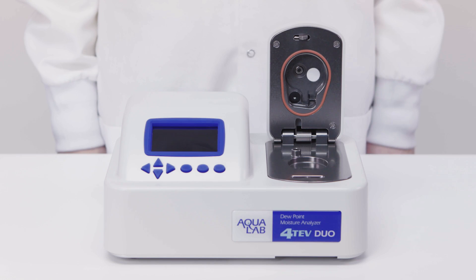The final option is the Series 4 DUO. The DUO uses a product-specific calibration to let you measure both water activity and moisture content on the same product simultaneously.